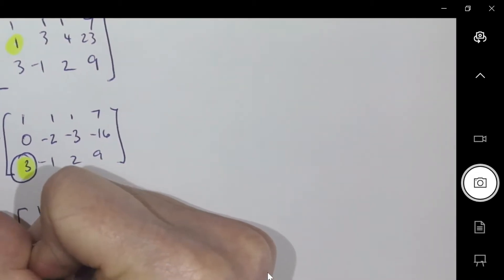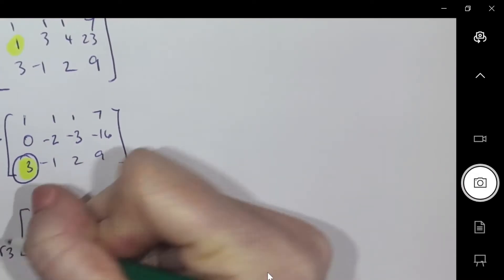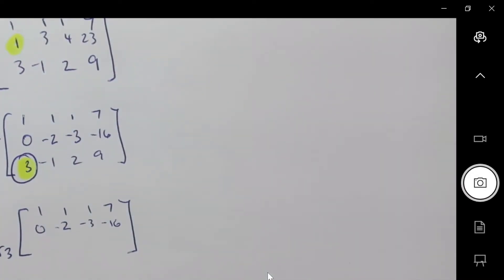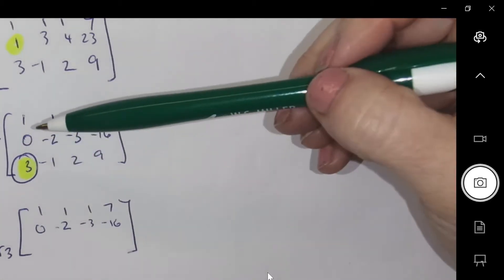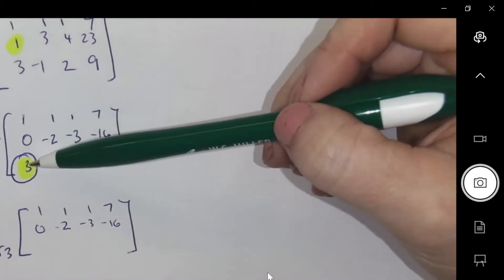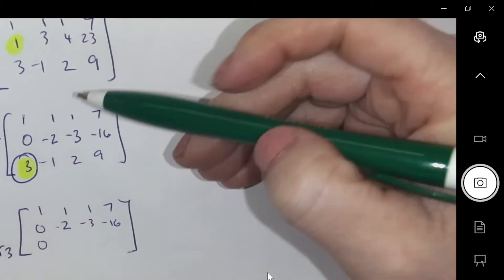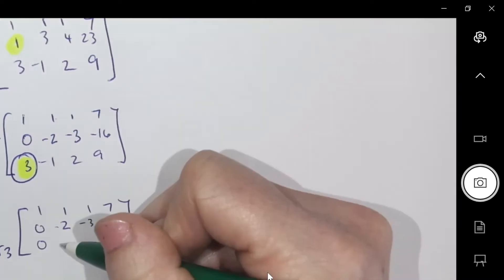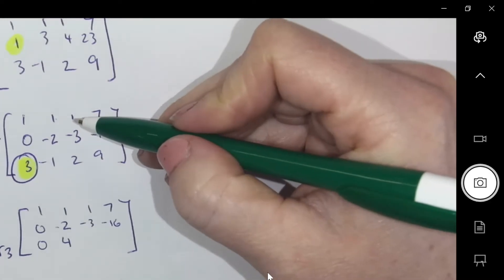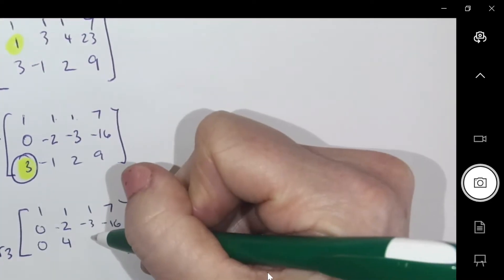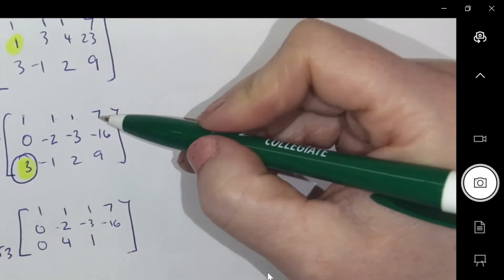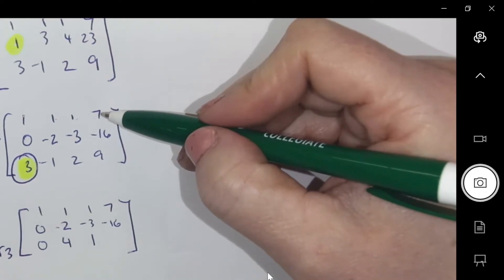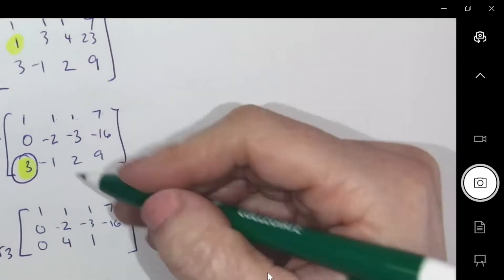You can't use the second row. So you have to go with the first row. Put three of these. Subtract that. So three row one minus row three. Okay. So three minus three, zero. Three minus negative one, four. Three minus two, one. Three of these is 21. Minus nine is 12.